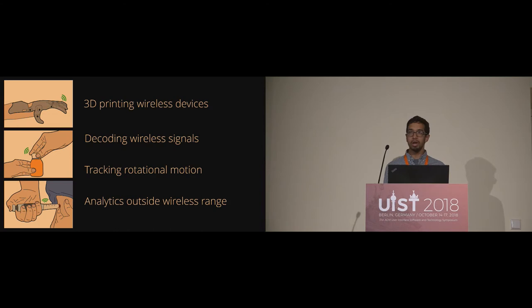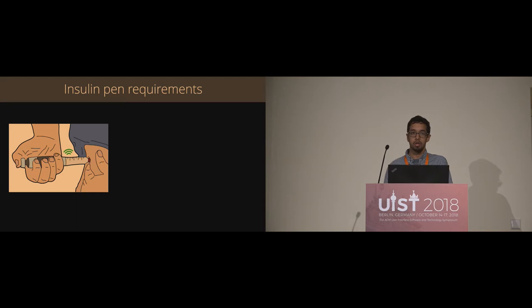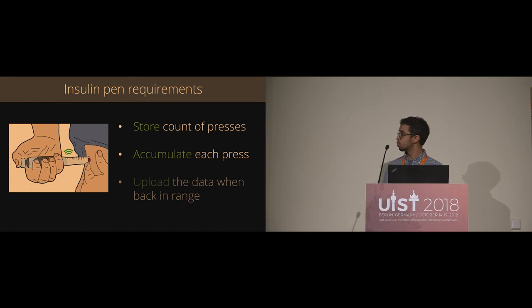So up until this point, I've shown you how we can receive data up to a few meters away from an access point. But what happens if we go even farther away? People may use these printed objects far away from an access point, so I'm going to talk quickly about how we can use storage to enable analytics outside our wireless range. If we look at this in the context of an insulin pen, we can see first what our requirements really are. What we'd like to do is store the number of times that insulin pen has been pressed, and then accumulate that data to see a total of how much has been dispensed. Last, of course, when we get back within our wireless range, we want to upload that data.